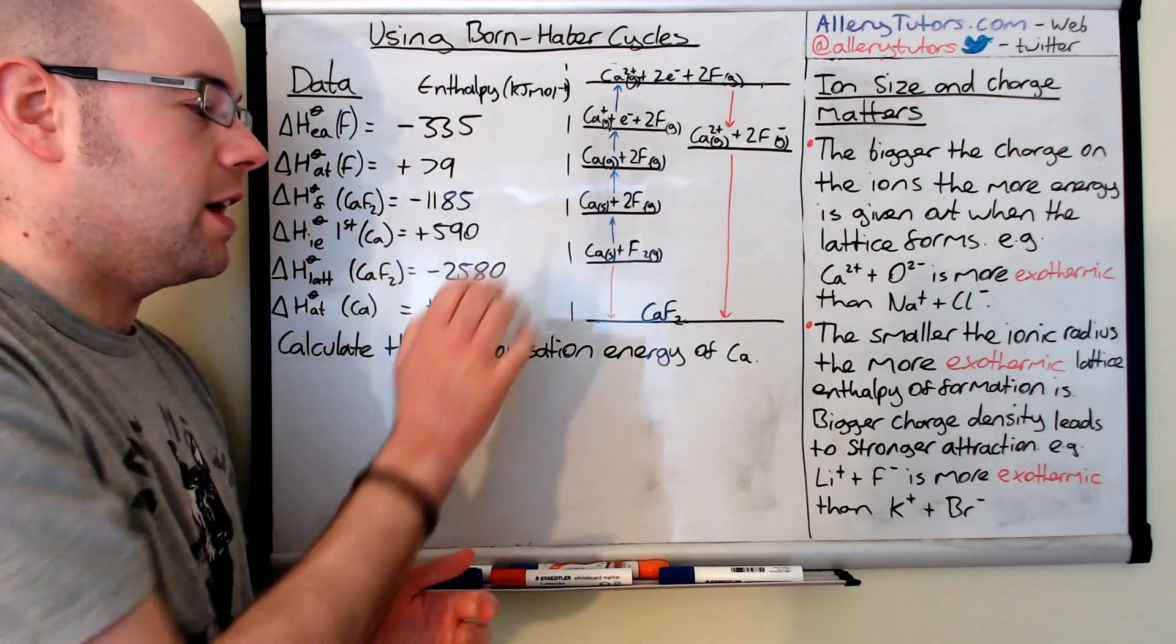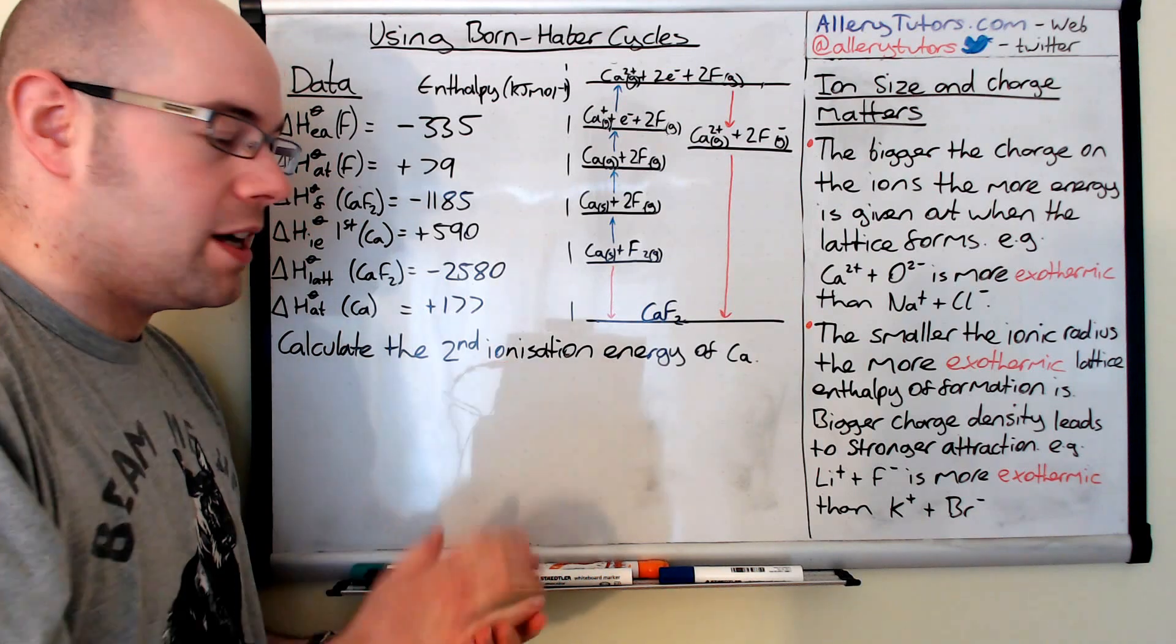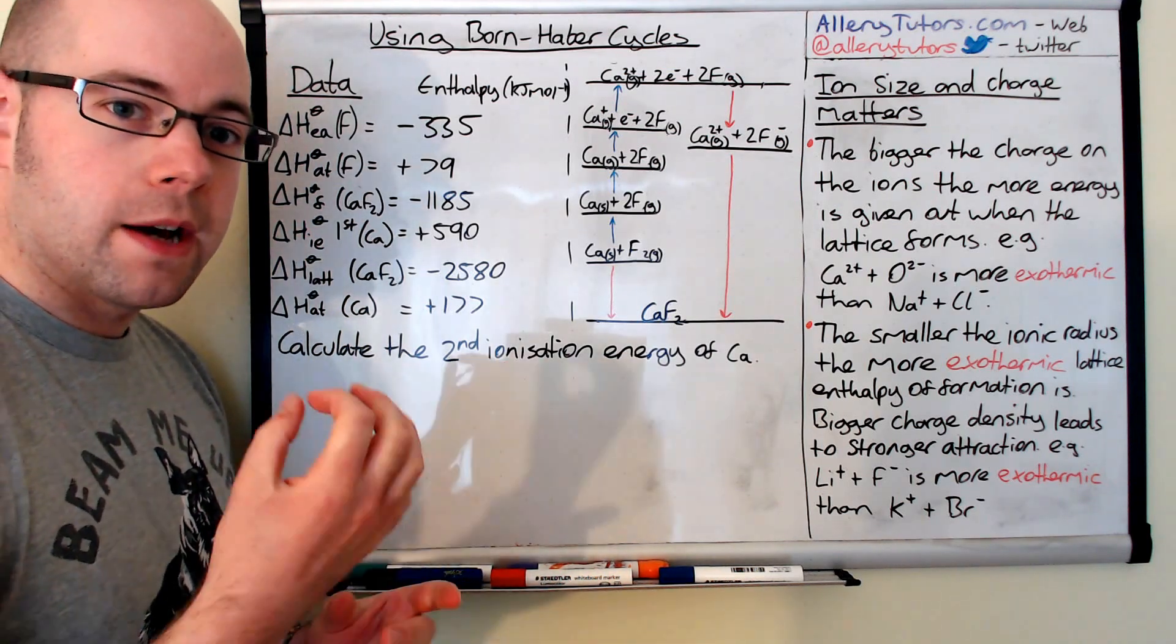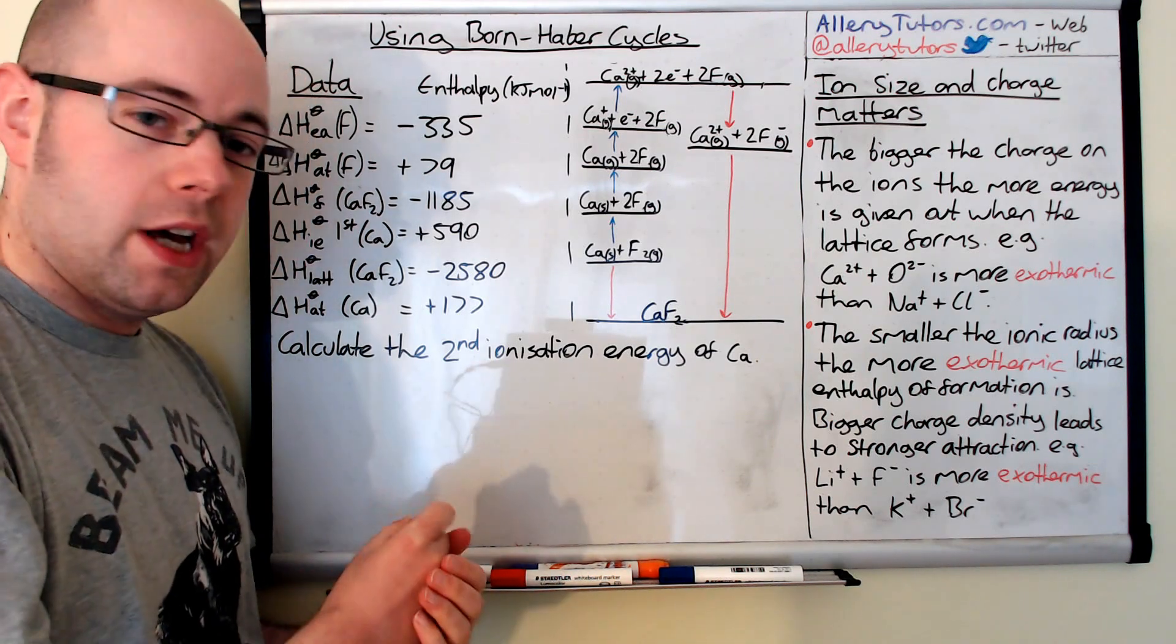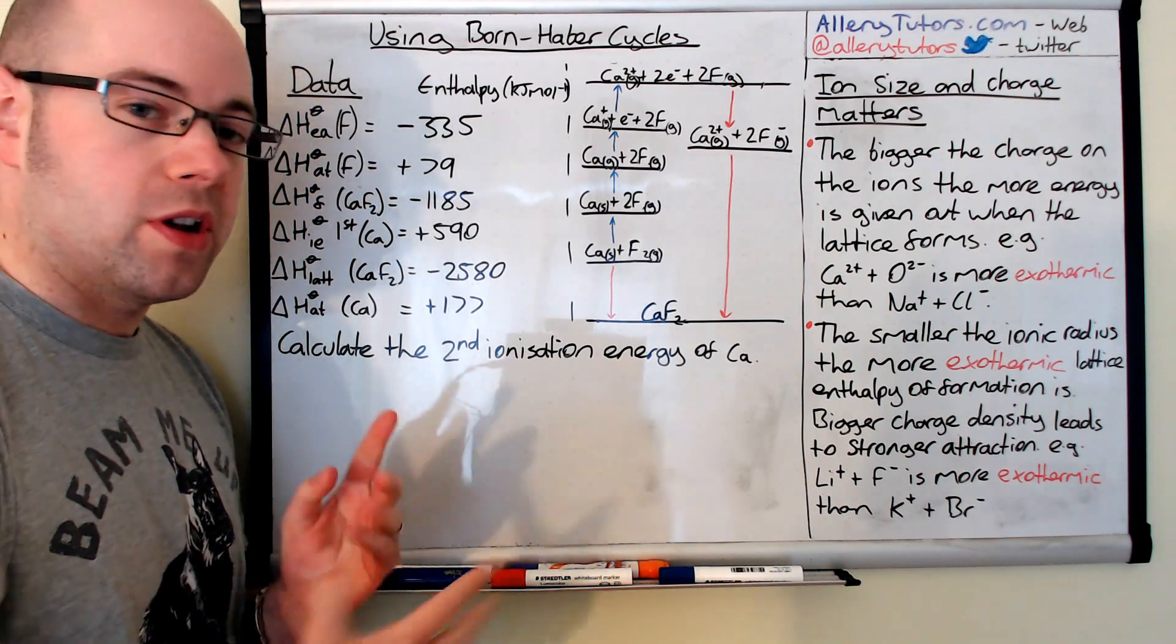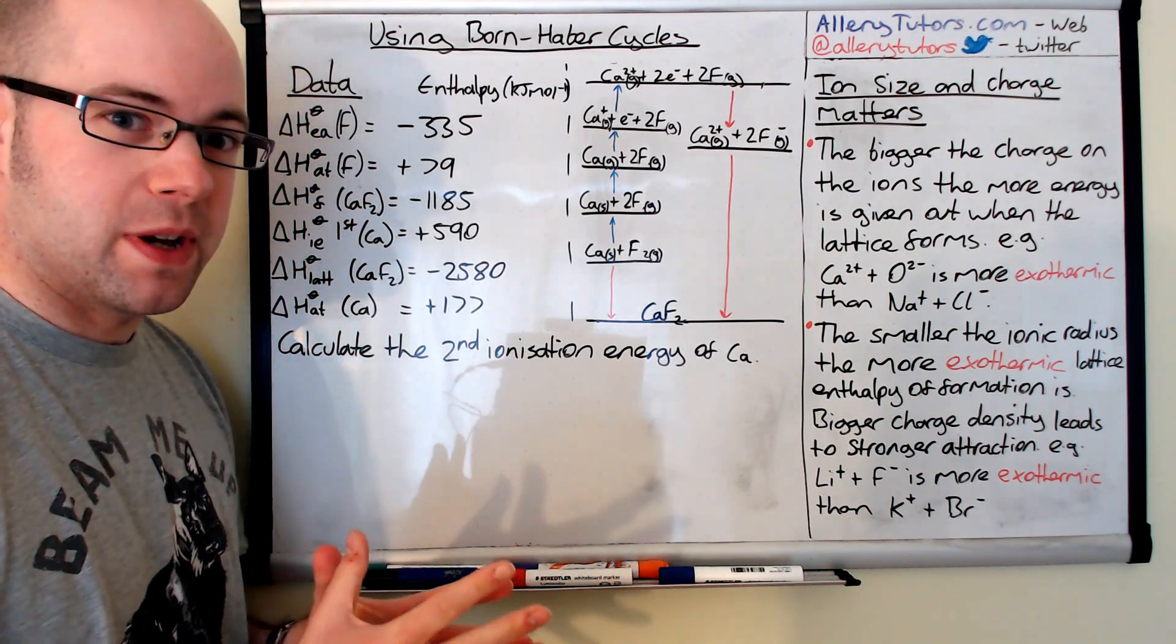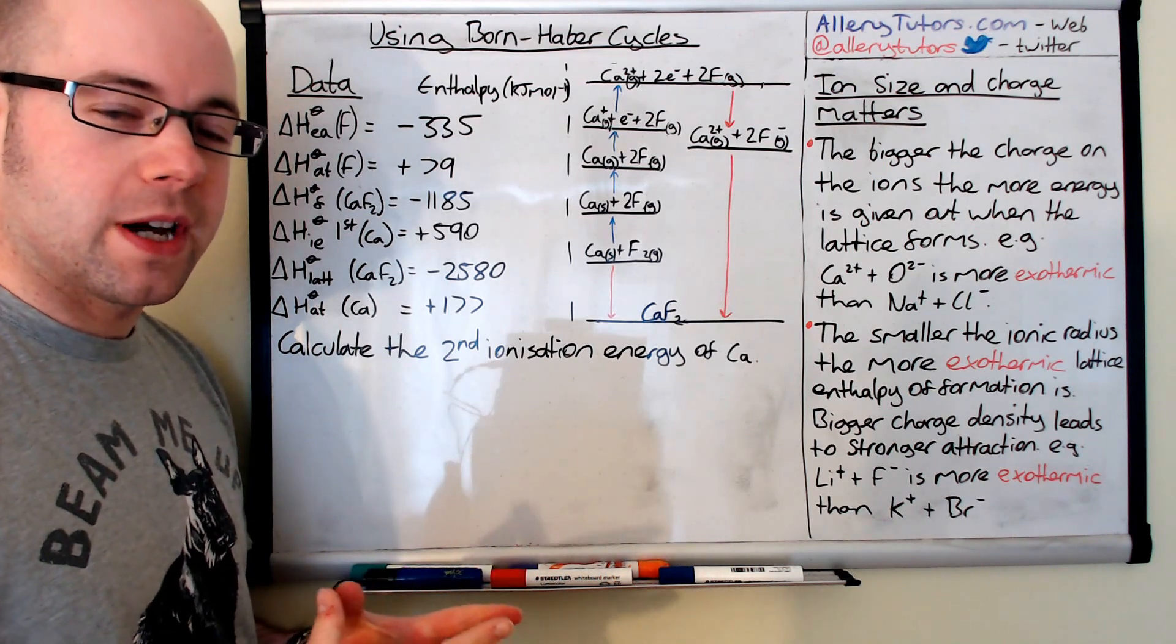I'm going to use this data to calculate the second ionization energy of calcium. In the example they could ask you to calculate any part of this cycle and I've picked an obscure one on purpose to show you how the cycle works. It doesn't matter which bit they ask you to work out, it's all worked out in the same way.